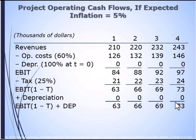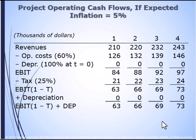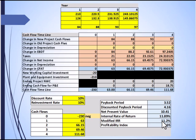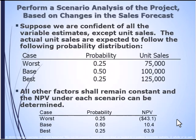Here we have an example where we have inflation of 5%. We see how revenues are changing and how operating costs are changing, and we end up with our cash flows at the bottom. They were 60s across the board, but now because every year there's some inflation, every year there are going to be some changes in our free cash flows. This shows up when we apply this to our cash flow worksheet — we can see how the numbers change. It also has an impact on our net present value and our internal rate of return. This project, in this case, turns out to be a positive net present value project.